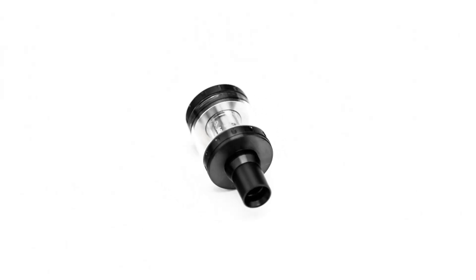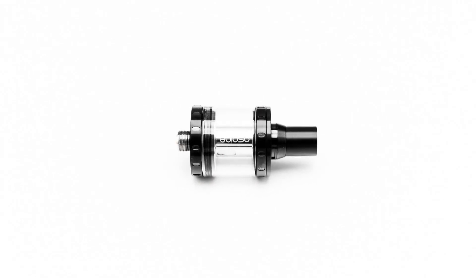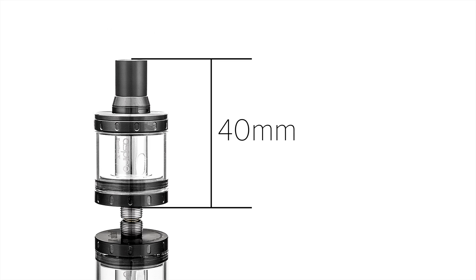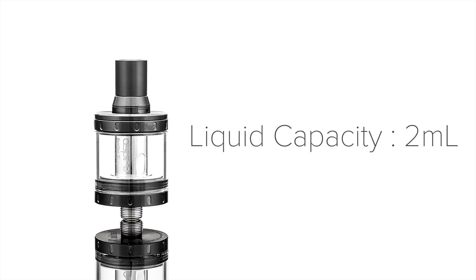Despite the small size, the Nautilus X performs quite well for flavor chasers. The Nautilus X is 22mm in diameter and has a height of 40mm from the base of the deck to the top of the drip tip. The liquid capacity is quite small, at 2ml.